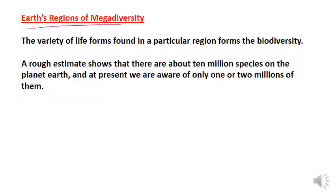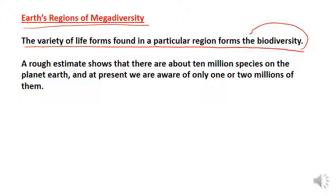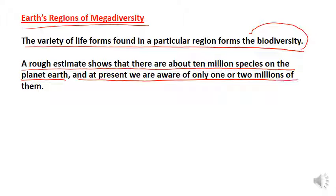Earth's region of mega diversity: The variety of life forms found in a particular region forms the biodiversity. और जो life के forms होते हैं, जो अलग-अलग variety होते हैं, वही biodiversity को form करते हैं. A rough estimate shows that there are about 10 million species on planet Earth, and at present we are aware of only one to two million of them.